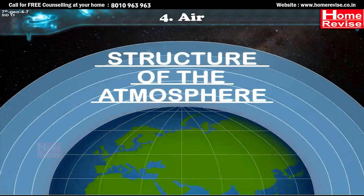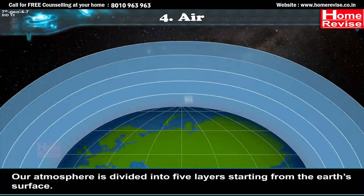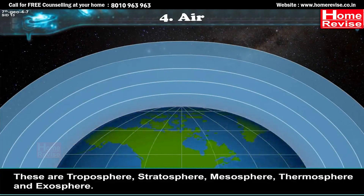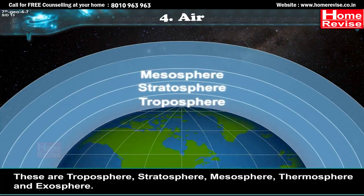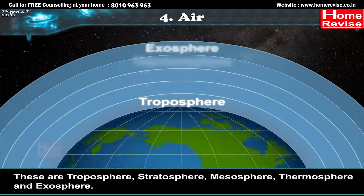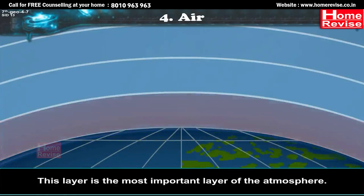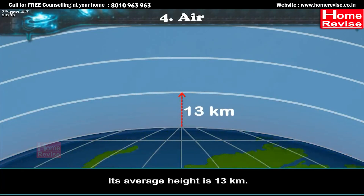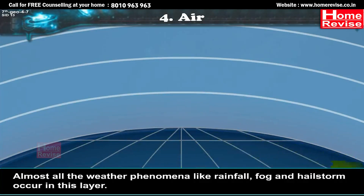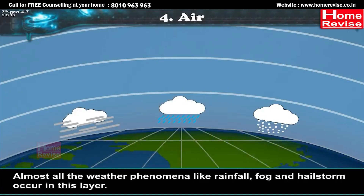Structure of the Atmosphere. Our atmosphere is divided into five layers, starting from the earth's surface: troposphere, stratosphere, mesosphere, thermosphere, and exosphere. The first layer, the troposphere, is the most important layer of the atmosphere. Its average height is 13 kilometers. The air we breathe exists here, and almost all weather phenomena like rainfall, fog, and hailstorm occur in this layer.